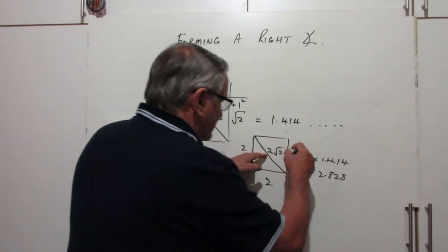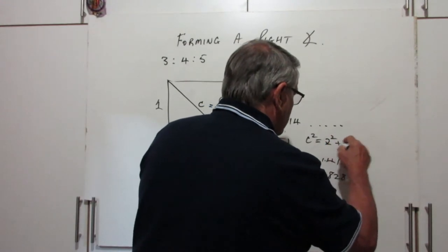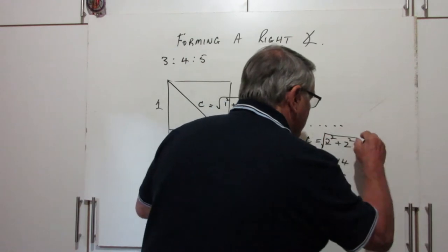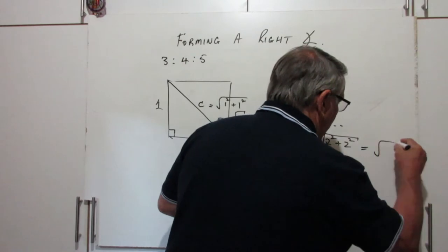That's a square, remember. So, C squared is equal to 2 squared plus 2 squared. Or I can write C is the square root of 2 squared plus 2 squared. 2 squared is 4, 2 squared is 4, so it's the square root of 8.